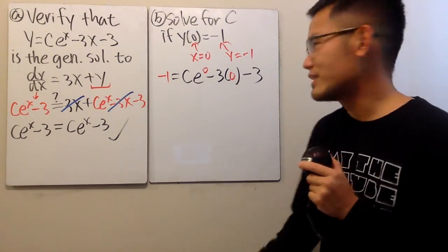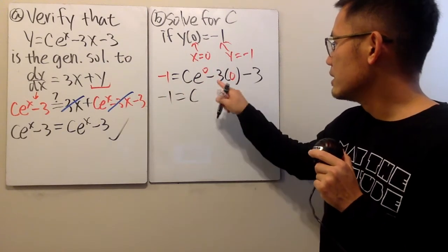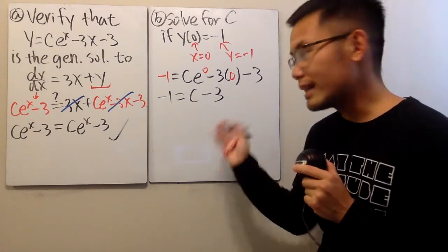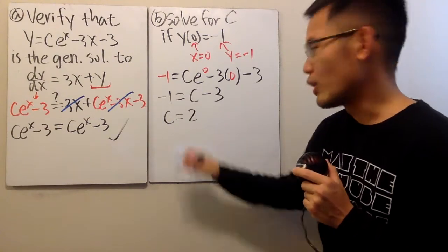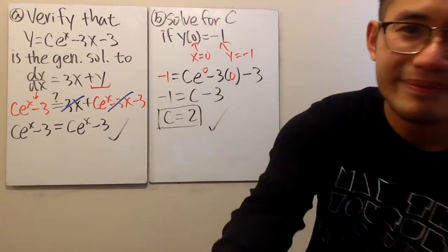Now, let's just work this out. This right here is negative 1. e to the 0 is 1 times c is still c. This is 0 and then minus 3. And of course, we can just add a 3 on both sides. So we see c is equal to 2, just like that. So with this, we are done. Thank you.